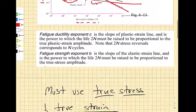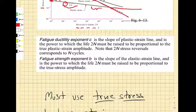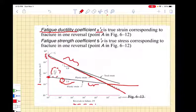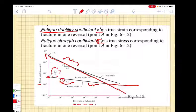They give names to these things. The fatigue ductility coefficient is ef prime. It's the true strain corresponding to one reversal. You load it up and it fails. The fatigue strength coefficient, sigma f prime, is the true stress corresponding to one reversal.